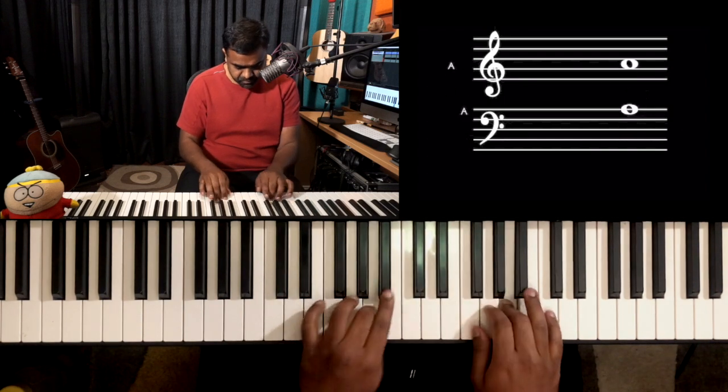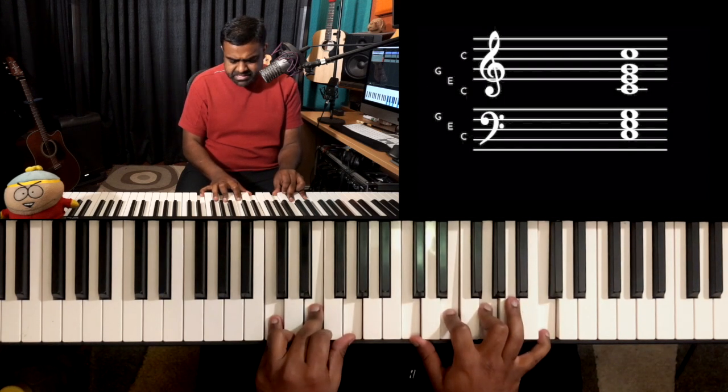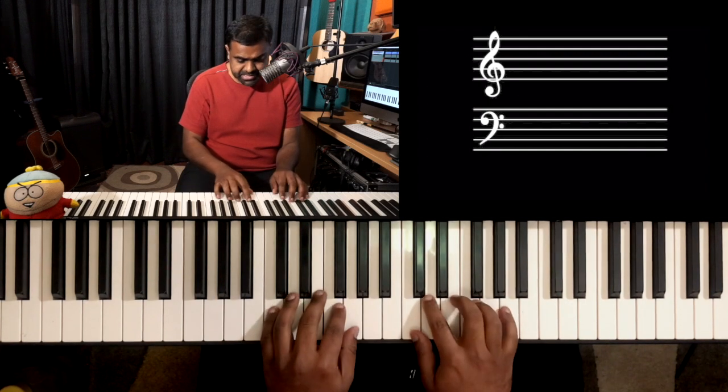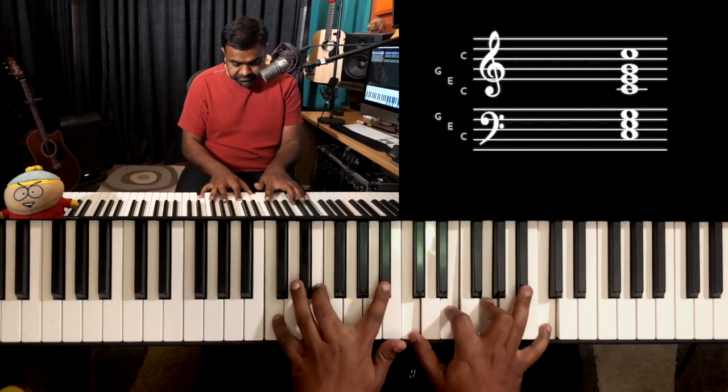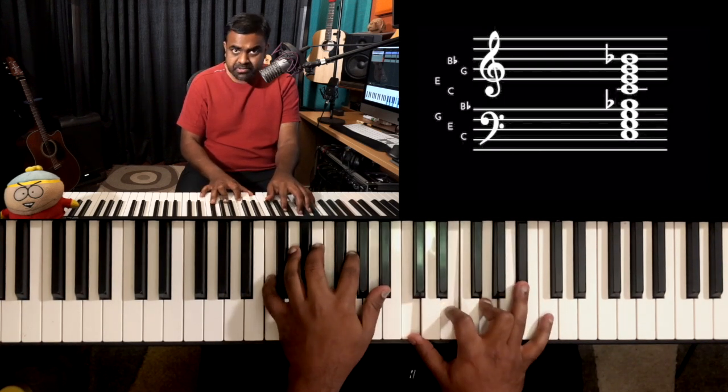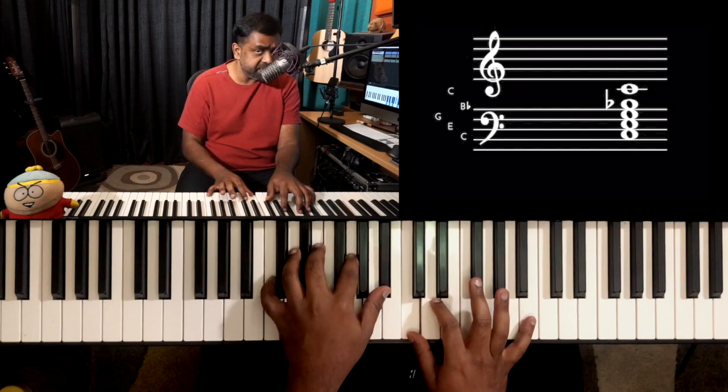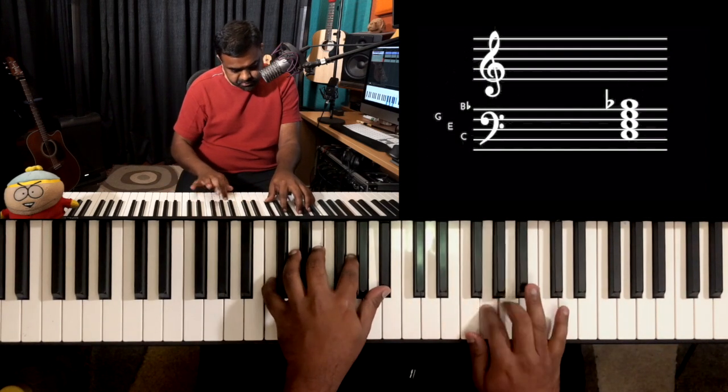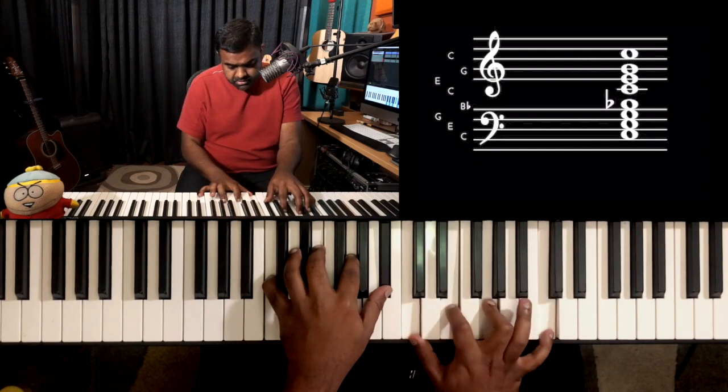The first thing I want to do is build the Mixolydian scale. Let's do it on the key of C. C Mixolydian is very similar to the major scale, the only difference being it has the 7♭, which in this case is B♭. B♭ is called the minor 7th or the dominant 7th. And this is a great chord which demonstrates that mode: C dominant 7th or C7. So that's the Mixolydian.